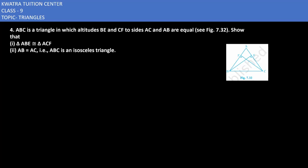Let's start with question number 4. It says ABC is a triangle in which altitudes BE and CF to sides AC and AB are equal. Show that triangle ABE is congruent to ACF, and we have to show that AB is equal to AC in the second case.